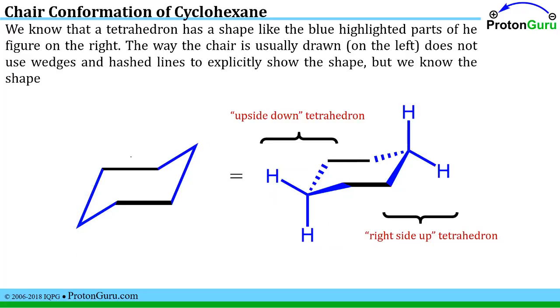So when people draw out the chair conformation, they're assuming that you know that the carbons are tetrahedral and that this is the part of the ring that's pointing out towards you. Once you know that, you know that those lines actually are wedges.